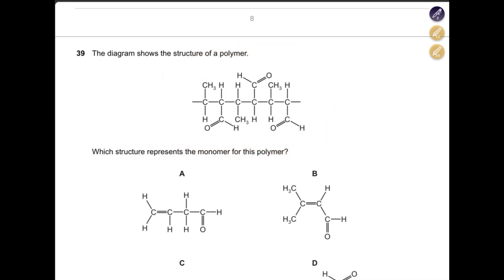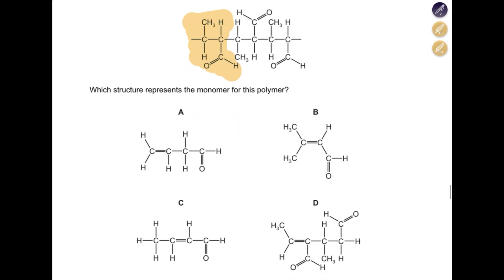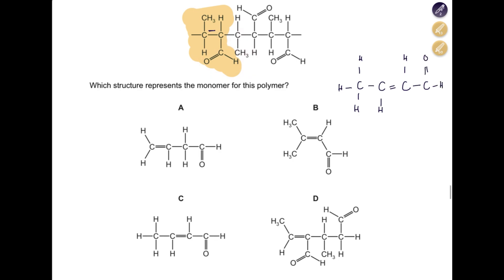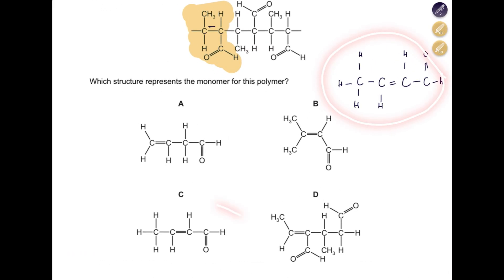This diagram shows the structure of a polymer. You have to identify the monomer. Identifying the repeating unit by drawing lines between repeat sections, the monomer contains a double bond. Drawing it out: C=C with CH₃ on one side and H on the other, and CH on the right side. Comparing with the answer options, this matches exactly one of them.